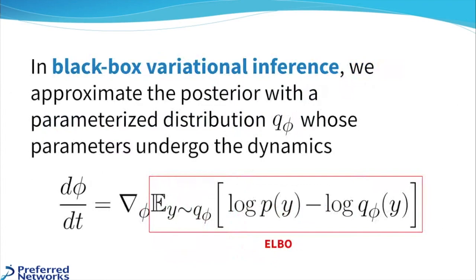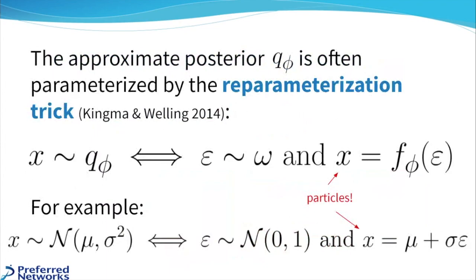Well, it turns out that in BBVI, one common method is called the reparametrization trick. That's when we want to sample from our approximate posterior. And we do so by first sampling from a fixed distribution, omega, and running that sample through another function, f of phi, a deterministic function f phi. And the output of that is our ultimate sample.